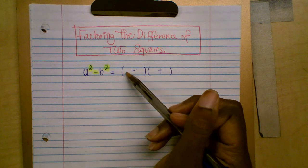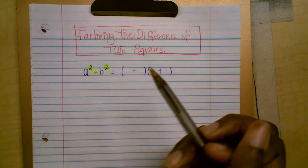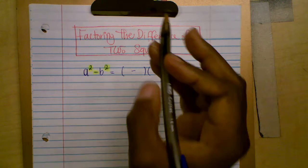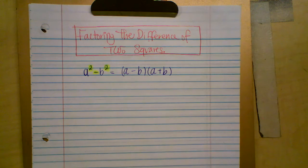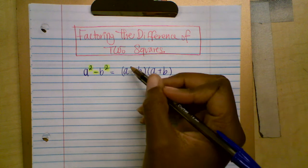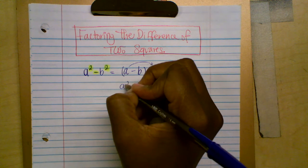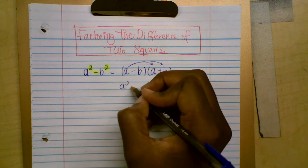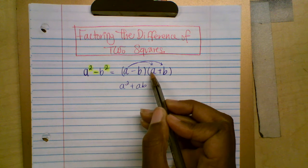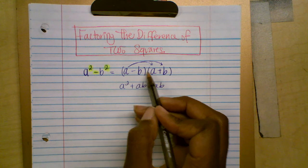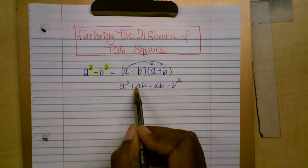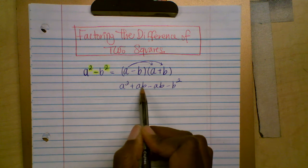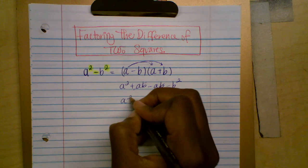Remember: whatever you're going to write inside the parentheses, in the factor, you have to drop the exponent of two. So you're going to write the first factor as A, then B, and the second one A and B. We can apply the distributive property to verify: A times A gives A squared, A times B gives positive AB, negative B times positive A gives negative AB, and negative B times positive B gives negative B squared. The middle terms are the same but the signs are opposite, so they cancel out, leaving us with A squared minus B squared.